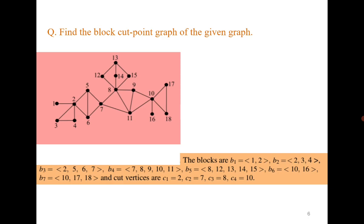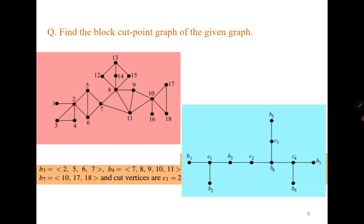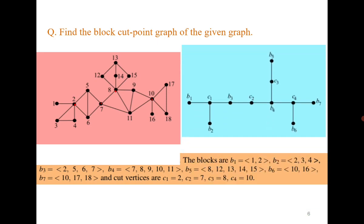Let me show you the answer, but first try it by yourself. For this graph there are seven blocks. First you can identify the cut vertices: 2, then 7, then 8, and then 10. Four cut vertices are there, and there are seven blocks. This is how the block cut-point graph looks like. It is always a tree.